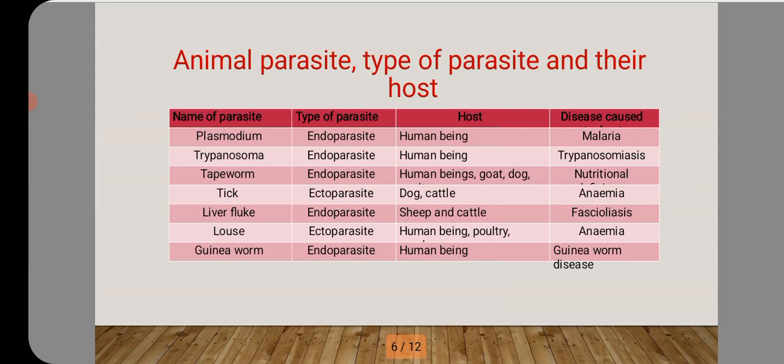The next parasite is the tick. The tick is an ectoparasite. The hosts are dogs and cattle. The disease it causes is anemia. So the table talks about many parasites, their type, their host, and the disease they cause. These are the animal parasites.